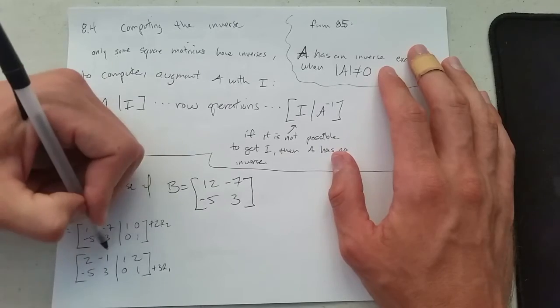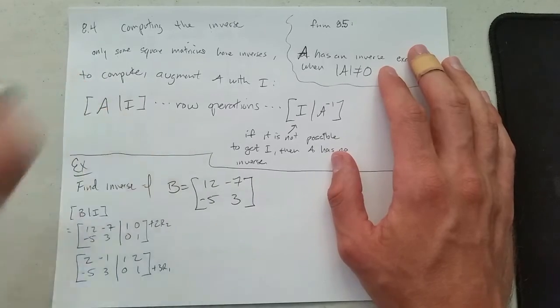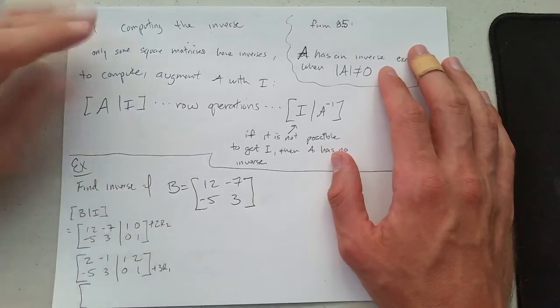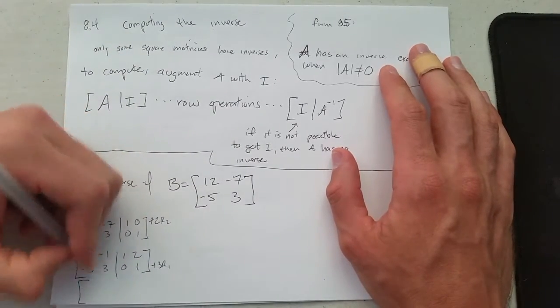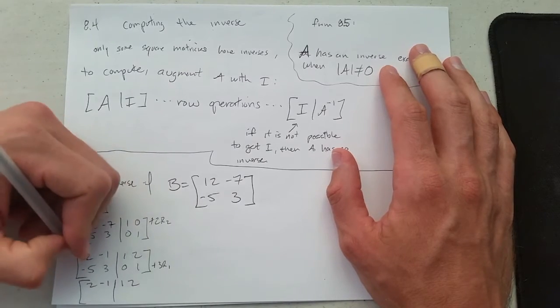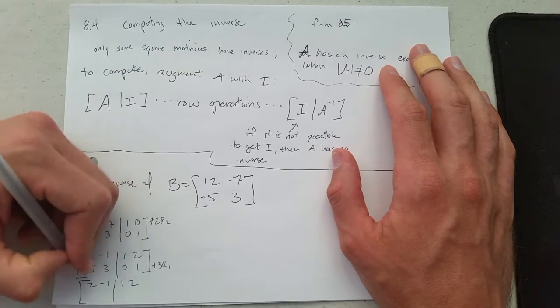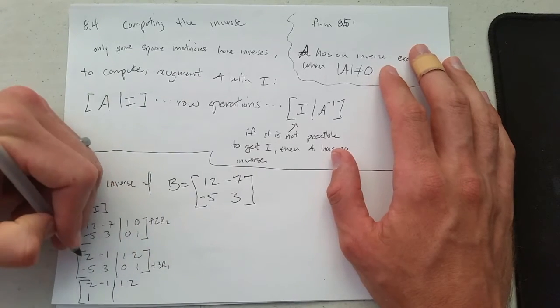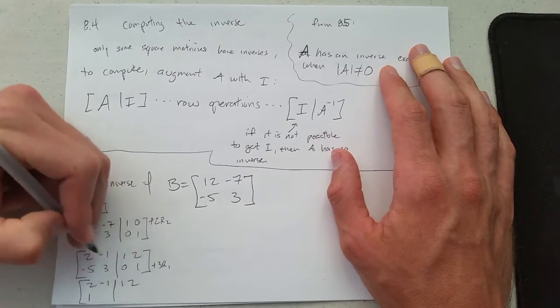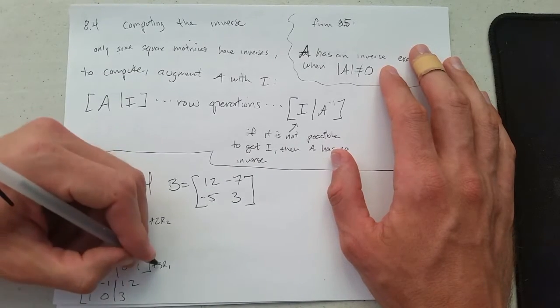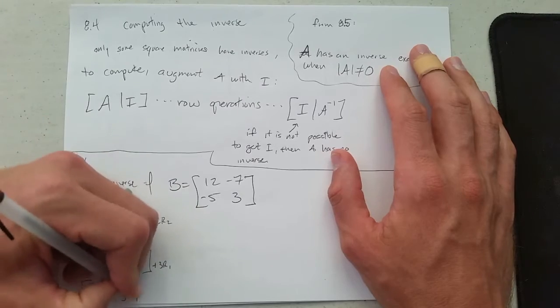So I'm going to take three row ones to knock out that. So we have 2, negative 1, 1, 2, and then 3 times 2 is 6 minus 5. Ah, that's positive 1. So we have 2, negative 1, 3, and 0 and 3, 6 plus 1, 7.